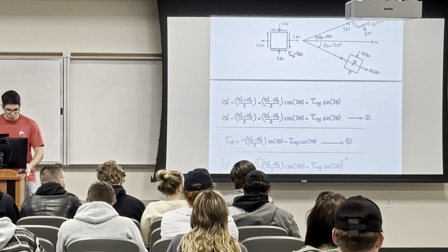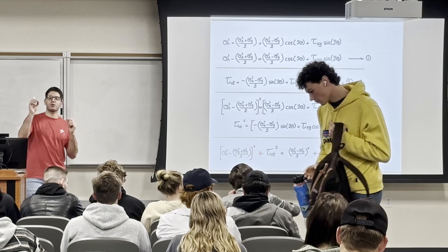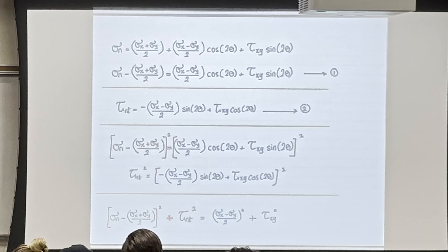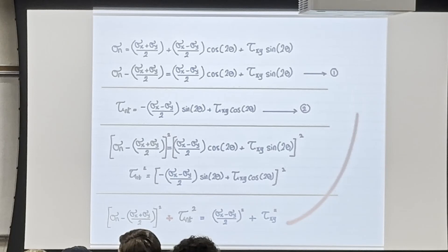Mohr's Circle allows you to visualize all possible stresses that can arise with different rotations theta. Basically, Mohr's Circle started with the σ_n equation, which is the base for everything. The derivation of Mohr's Circle is in terms of 2θ, so every theta in the circle is going to be in terms of 2θ.